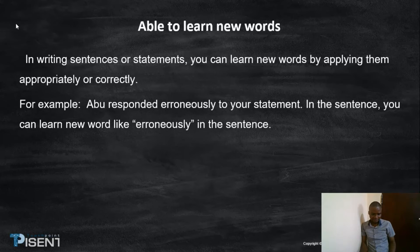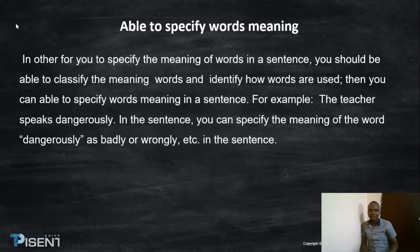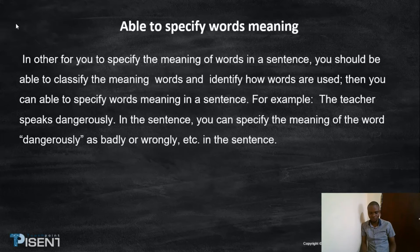The third outline of this lesson objective is for you to be able to specify words' meaning in a sentence. In order to specify the meaning of words in a sentence, you should be able to classify the meaning of words and identify how words are used. For example, 'The teacher speaks generously.' In the sentence, you can specify the meaning of the word 'generously' and how it is used.